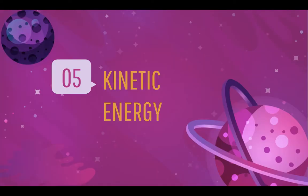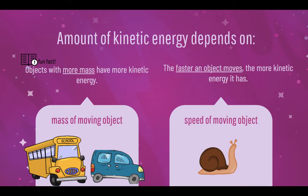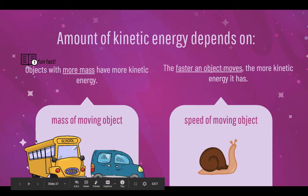Kinetic energy is a form of energy that moving objects possess. The amount of kinetic energy depends on the mass of the moving objects and the speed of the moving objects. An object with higher mass has more kinetic energy. So a bus, which has a higher mass than the car, has more kinetic energy.